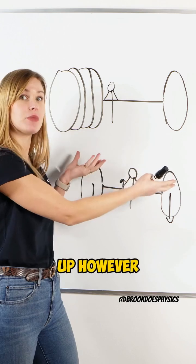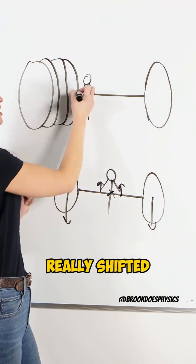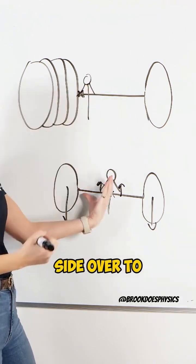However here, the problem is when they try to use their two hands, the center of mass gets really shifted over to this side, over to the heavier masses.